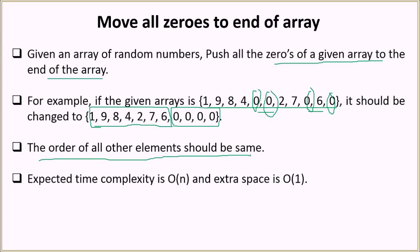The time complexity we want is O(n) and extra space complexity to be O(1). So the elements should be traversed only once and extra space used should also be of order one.